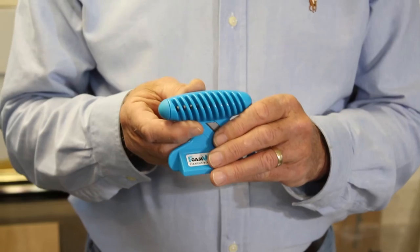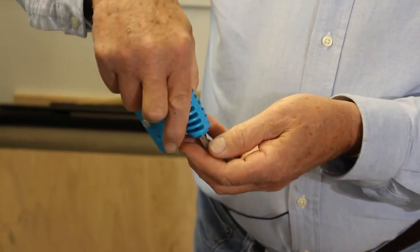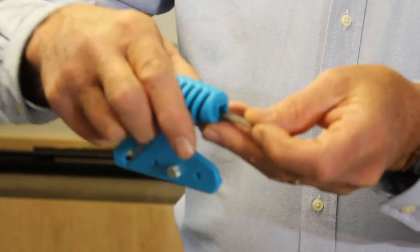To find the blade storage on the straight bevel cutter, remove this little cap and there are your blades at the back.